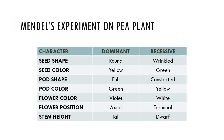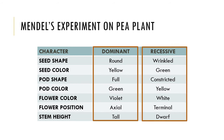How did Mendel arrive at formulating those four postulates? He did a series of experiments on garden pea plants, taking note of seven characters: seed shape, seed color, pod shape, pod color, flower color, flower position, and stem height. He also noted the two contrasting traits for each character, and was able to determine which trait is dominant and which is recessive after examining the results of monohybrid crosses he conducted.